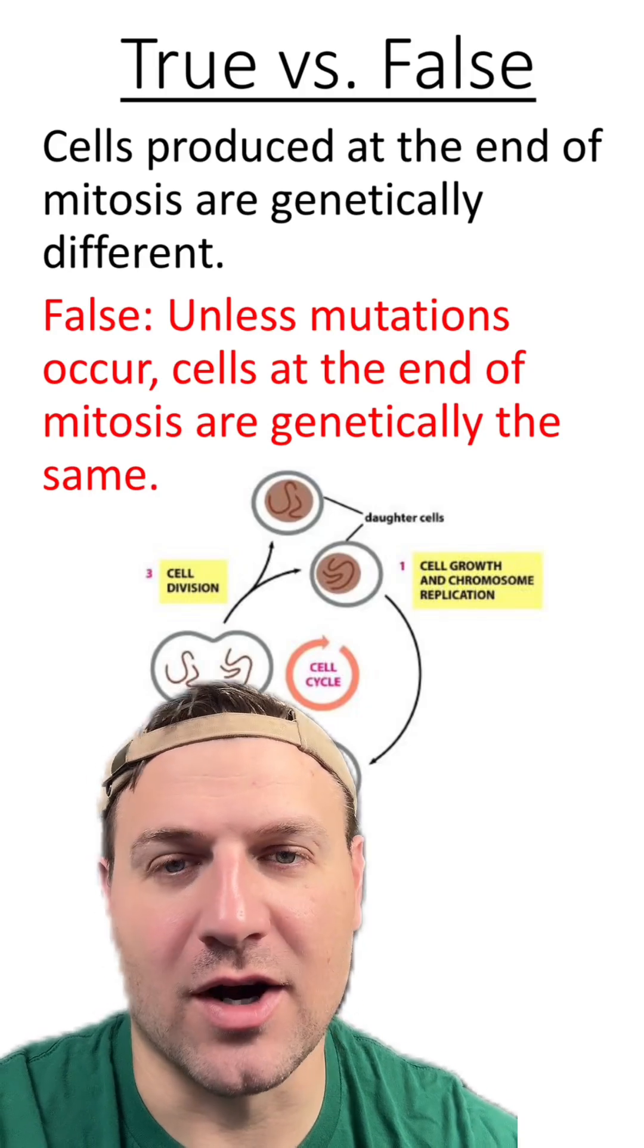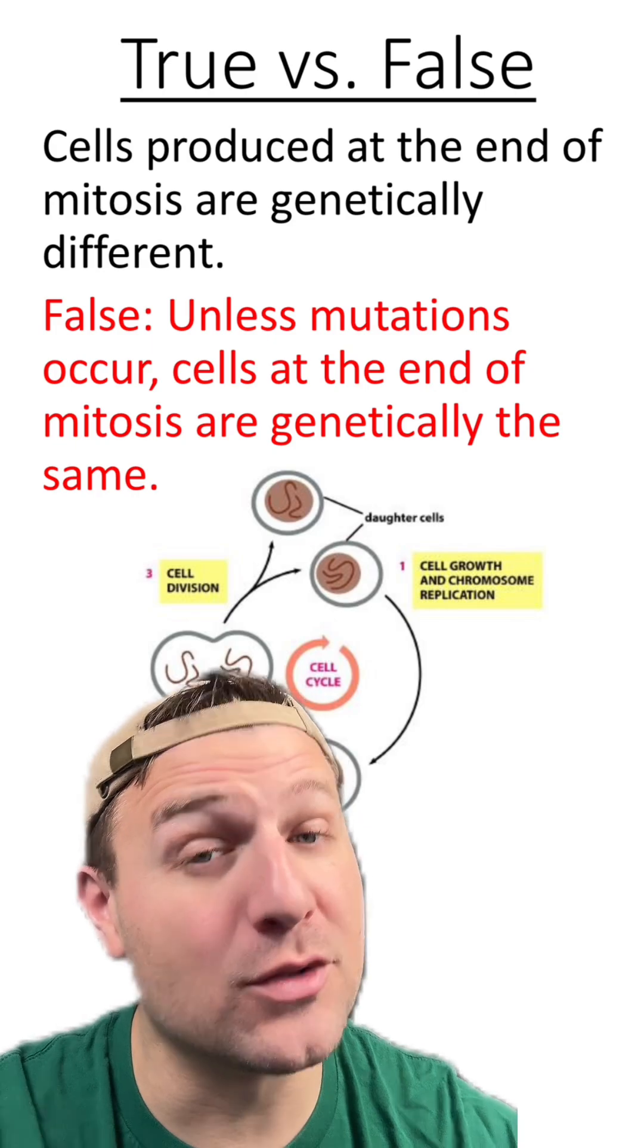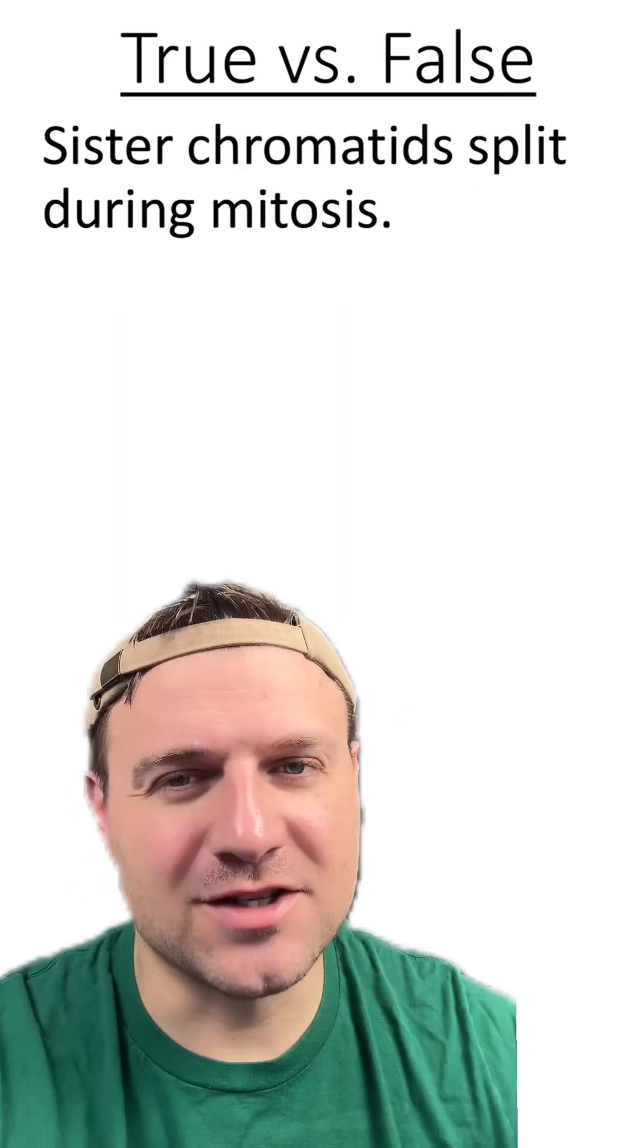Cells at the end of mitosis are identical, while the cells at the end of meiosis are genetically different.